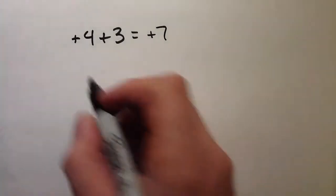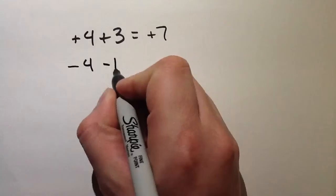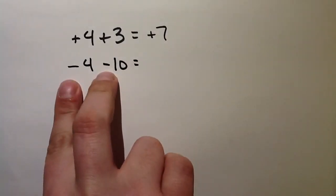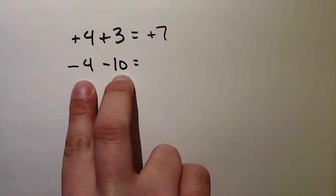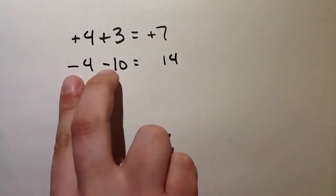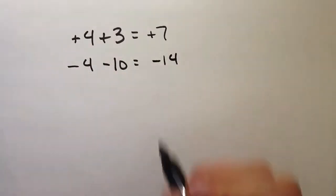Going with what I just said, let's look at negative 4 minus 10 equals. Again, they have the same sign, so I add the numbers. 10 plus 4 is 14, and I keep the sign, so negative.